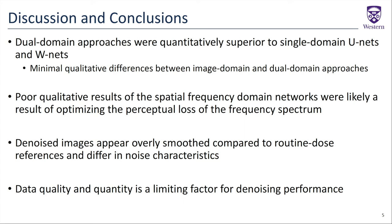In this study, we proposed a dual-domain cascade of U-nets operating in the spatial frequency and image domains, choosing the spatial frequency domain as a way of applying a learned convolutional filter following an initial filtered back projection. We found that the dual-domain approach was quantitatively superior to both image-domain and spatial-frequency-domain U-nets and W-nets, but there were minimal qualitative differences between the image-domain and dual-domain approaches. The poor qualitative results of the spatial frequency domain network can be attributed to the perceptual loss function being minimized in the frequency spectrum rather than the image domain, so while the frequency spectrums may appear qualitatively accurate, the same cannot necessarily be said for the final image domain output.